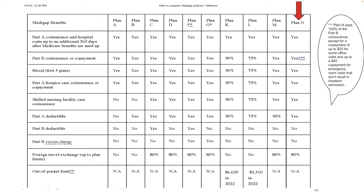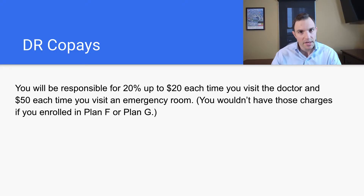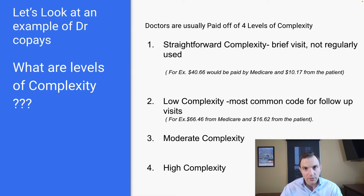One thing about the co-pay: it's 20% up to $20. So what does that mean? If the bill is less than $20, you're just going to pay the 20%. Doctors get paid off four levels of complexity.